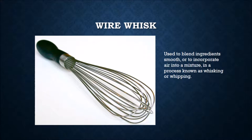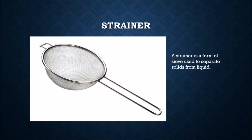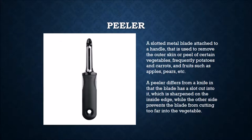A wire whisk is used to blend ingredients smooth or to incorporate air into a mixture, in a process known as whisking or whipping. A strainer is a form of sieve used to separate solids from liquid. A peeler is a slotted metal blade attached to a handle, used to remove the outer skin or peel of certain vegetables like potatoes and carrots, and fruits such as apples and pears. The blade has a slot cut into it, sharpened on the inside edge, while the other side prevents the blade from cutting too far into the vegetable.